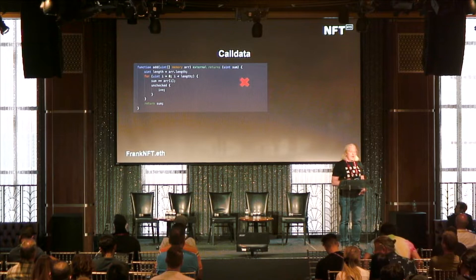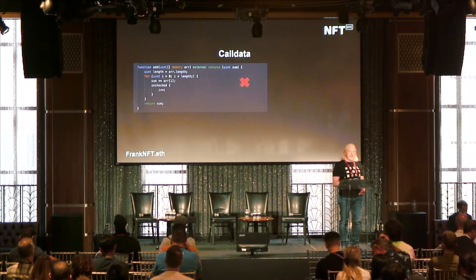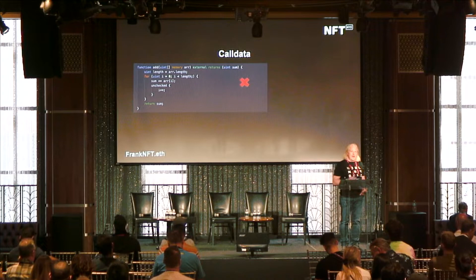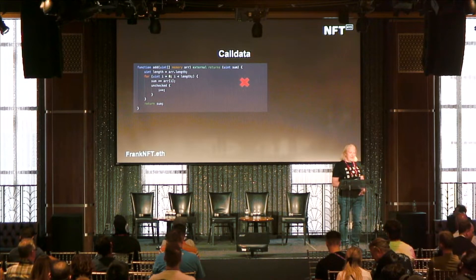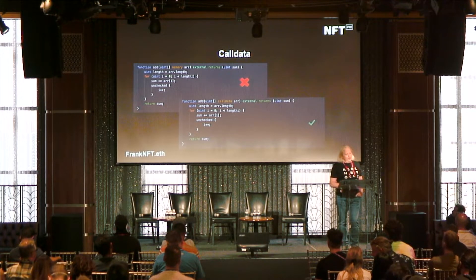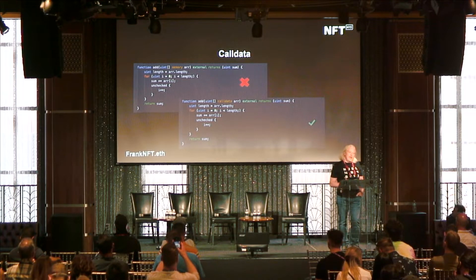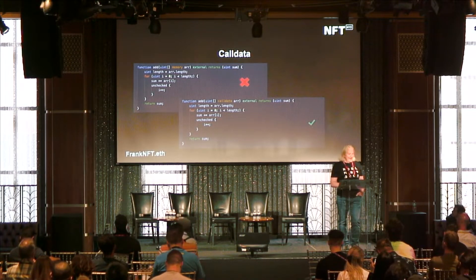Another example from a 721 contract — probably you have some airdrop method where you want to pass in addresses as an array. This is usually how you do it: you put in an array and you put that array in memory. But if you're not going to change the data in that array — you're only going to read it — you can actually use calldata, and calldata reduces your gas by a nice amount.